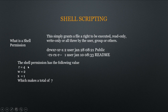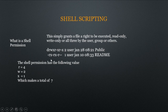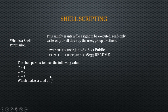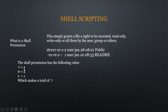Shell permission values are as follows: 'r' (read) has a value of 4, 'w' (write) has a value of 2, and 'x' (execute) has a value of 1. If you sum all three together you get 7. So if you grant a user a permission of 7, it means you are granting the user the permission to read, write, and execute that file.